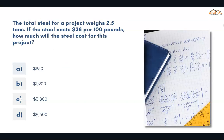The total steel for a project weighs 2.5 tons. If the steel costs $38 per 100 pounds, how much will the steel cost for this project? The correct answer is B: $1,900.